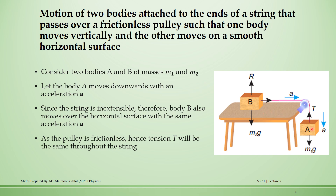We have two bodies: body A having mass M1 and body B having mass M2. When block A moves downward with acceleration A, block B moves with the same acceleration but in the horizontal direction. Because the pulley is frictionless, there is no friction loss, so the tension T remains the same throughout the string.